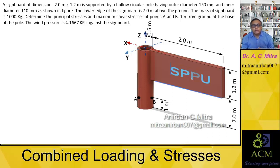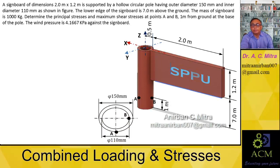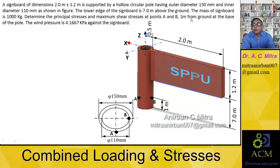A sign board of dimensions 2m × 1.2m is supported by a hollow circular pole having an outer diameter of 150mm and inner diameter of 110mm. The longer edge of the sign board is 7m above the ground — you can see this edge is 7m above the ground. The mass of the sign board is 1000kg. Determine the principal stresses and maximum stresses at point A and B, 1m from the ground at the base of the pole.